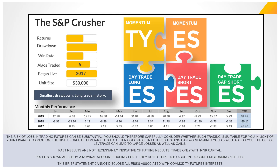I wanted to share those data points so you're aware, and it also shows that I monitor these things — if I ever lose confidence in an algo, I'll take action. To summarize the Crusher: small drawdown, long trade history — those are the big advantages. Returns are decent, win rate is okay, trades five algos. The drawdown is the lowest of any system we offer, even lower than the Pro Trader. The reason is this system only holds one ES overnight and one TY on a $30K account, whereas the Pro Trader can hold two ESs overnight plus one 10-year.